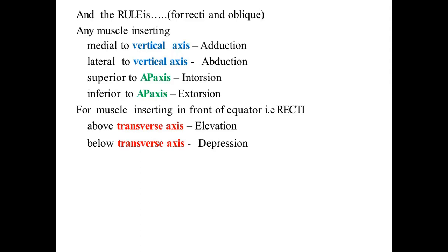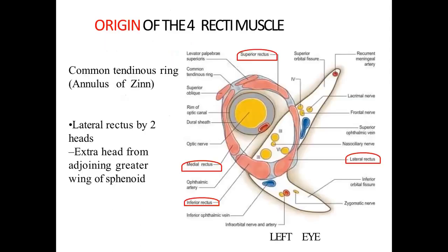The rule for recti and oblique muscles: a muscle inserting medial to the vertical axis causes adduction; lateral to the vertical axis causes abduction; superior to the anteroposterior axis causes intorsion; inferior to the anteroposterior axis causes extorsion; in front of the equator (above transverse axis) causes elevation; below the transverse axis causes depression. The origin of the four recti muscles is the common tendinous ring — the annulus of Zinn.